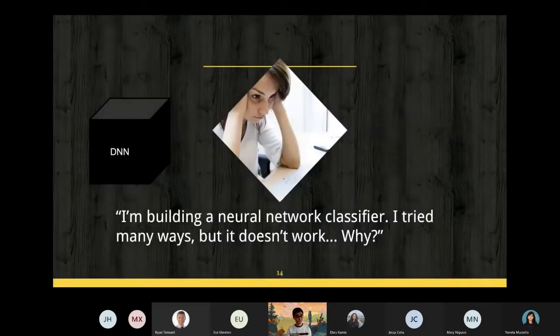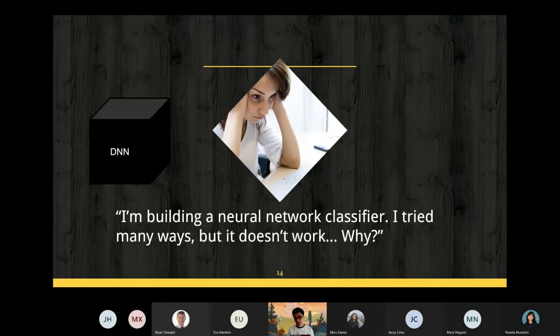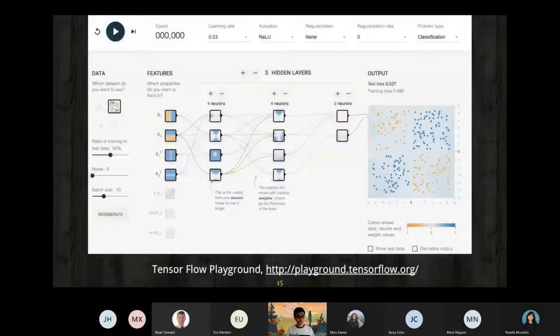But I have to continue my story. My friend Mary comes back to me. Now we know we have very complicated datasets with dramatically different characteristics. But I have another problem. She's building a neural network classifier and tries so many ways, but it doesn't work. She doesn't know why. Because the deep neural network is some kind of a black box. Without knowing how the model works, it's hard to determine which method to use.